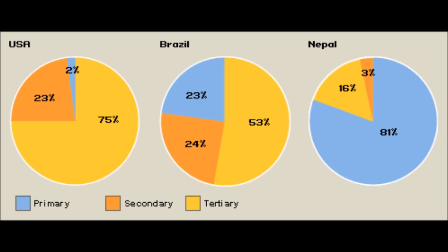In the graphics, we can see that in a developed country, the tertiary sector is the biggest one, while in less developed countries, such as Nepal, the primary sector is the largest.